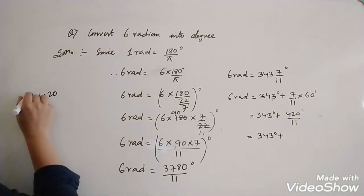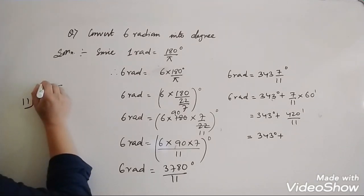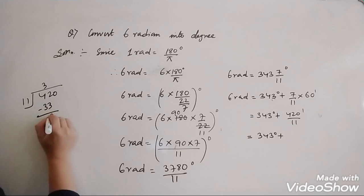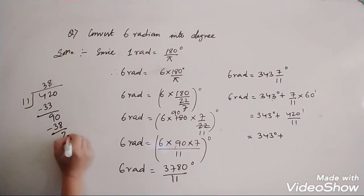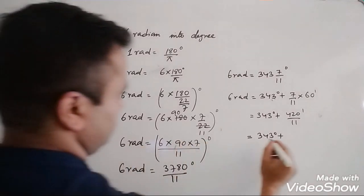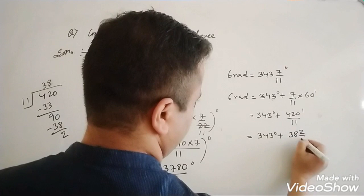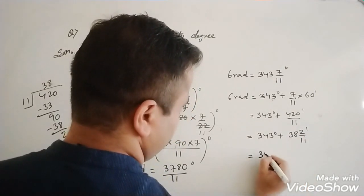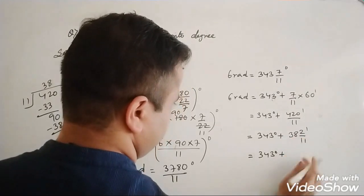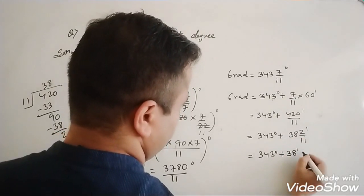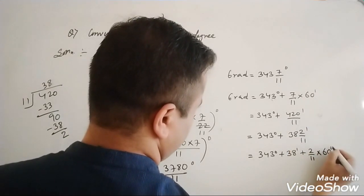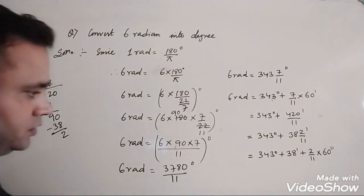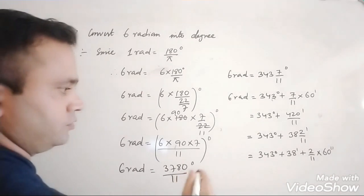Dividing 420 by 11: 11 into 42 goes 3 times giving 33; after subtracting 9 is left. Bring down 0 to get 90; 11 into 90 goes 8 times giving 88; after subtracting 2 is left. So this equals 38 and 2/11 minutes. This equals 343 degrees plus, now again separate the whole number and fraction: 38 minutes plus 2/11. Now convert the fractional minutes into seconds, because 1 minute equals 60 seconds. So 2/11 minutes equals 2/11 into 60.